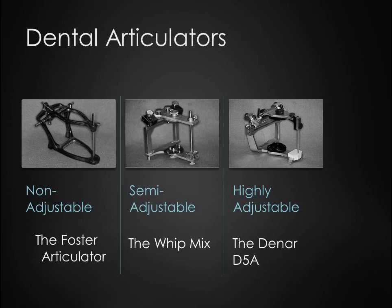An articulator is a mechanical device used in dentistry to which casts of the maxillary and mandibular teeth are affixed in order to reproduce the mandible in relation to the maxilla. Types of articulators include non-adjustable, semi-adjustable, and highly adjustable. Examples of each are pictured here. Semi-adjustable articulators are used in all removable partial denture cases.